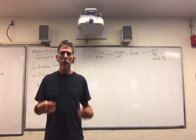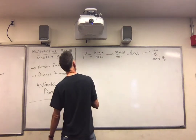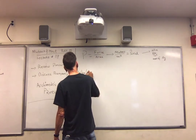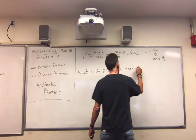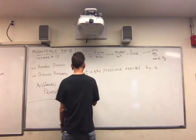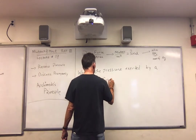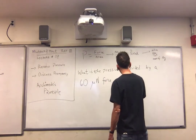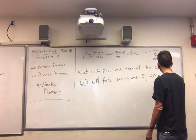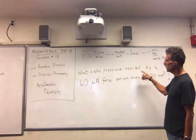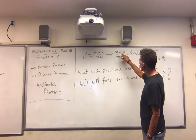Let me give you another problem to practice converting units, and then we'll move on to discuss a bit about buoyancy — no math, just a bit of discussion. What is the pressure exerted by a 60 micro-Newton force on an area of 20 nanometers squared? We want the answer in Pascals, so we have to have newtons per meter squared. We have nanometers squared, so we're going to have to convert.